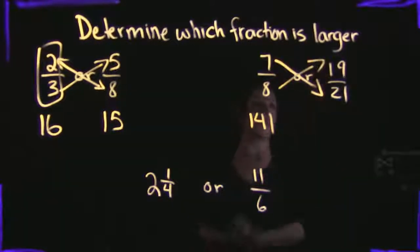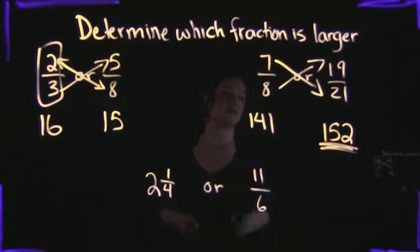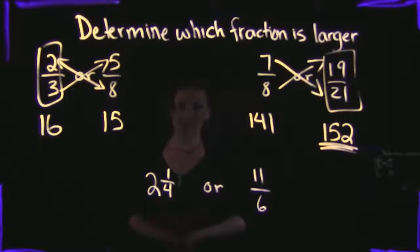And then taking 8 times 19, which is 152. So out of 141 and 152, 152 is definitely larger. So that means 19 over 21 is larger.